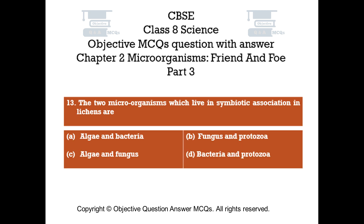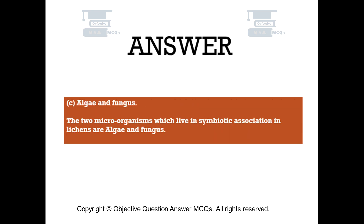Question number 13. The two microorganisms which live in symbiotic association in lichens are. Option A: Algae and bacteria. Option B: Fungus and protozoa. Option C: Algae and fungus. Option D: Bacteria and protozoa. The right answer is option C — Algae and fungus. The two microorganisms which live in symbiotic association in lichens are algae and fungus.